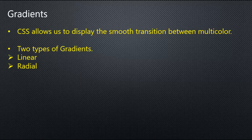Radial Gradients differ from linear in that they start at a single point and emanate outwards. The default is for the first colour to start in the centre of the element and fade to the end colour towards the edge of the element.